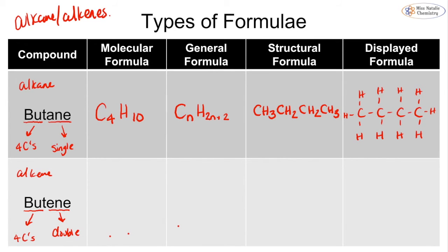Now the same for butene. Drawing four carbons and placing a double bond in the centre — it can go in different positions, which will be covered in the alkenes video. Adding hydrogens so every carbon has four bonds: the first carbon gets three hydrogens, the second carbon already has three bonds so needs only one hydrogen, the third carbon also needs only one hydrogen, and the last carbon needs three. That gives the displayed formula for butene.